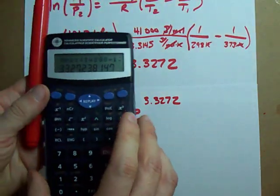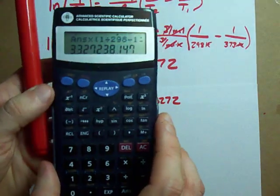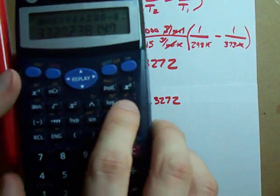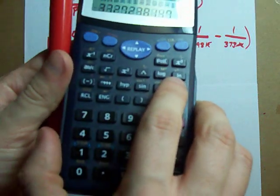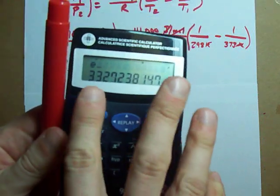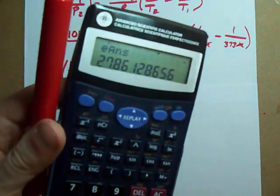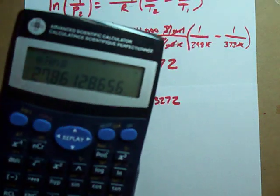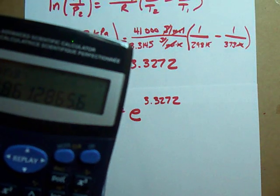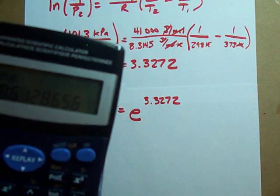So, on my calculator, I still have my number in there. Second function ln, because that's my E to the power of X button. E to the power of my answer gives 27.861.